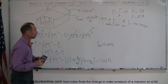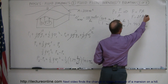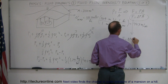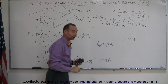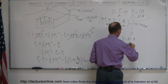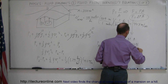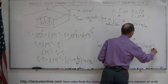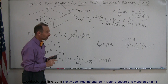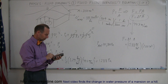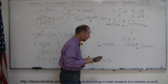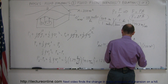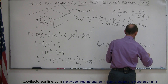Now let's calculate the force using force equals pressure difference times area. The pressure difference is 1,288 N/m², and the area is 200 m². The m² units cancel, and we get a force of 257,700 newtons.